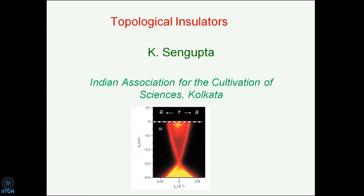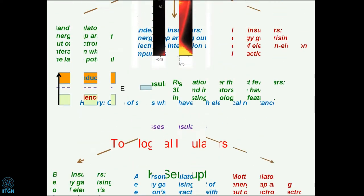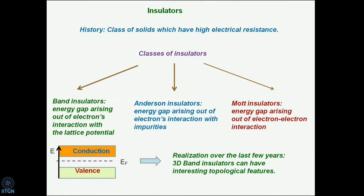Once people understood this, they started asking: is there a strong topological insulator where no matter what weak perturbation you apply, the topological properties are preserved? The answer leads to a host of new materials, one of which is the topological insulator.